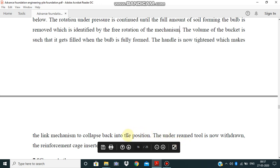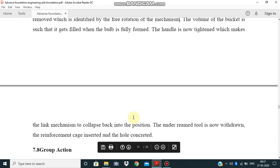And then the under-reamed tool is withdrawn from the area where the bulb is formed. The reinforcement cage is placed and the hole is concreted. The reinforcement cage means the pile body is filled and the hole is concreted. So concrete piles are made and the bulbs are formed.